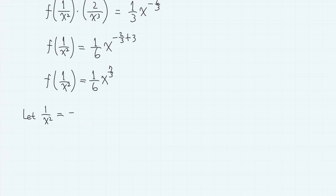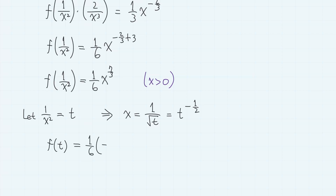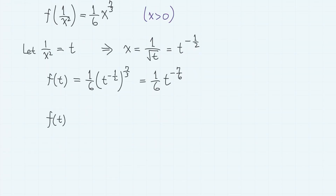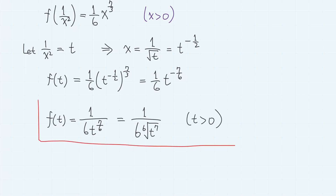Now let 1/x² = t. Because x is positive, we have x = 1/√t = t^(−1/2). So f(t) = (1/6) · (t^(−1/2))^(7/3) = (1/6) · t^(−7/6). We can write this as f(t) = 1 / (6 · t^(7/6)), or using radicals, 1 over 6 times the 6th root of t⁷. And of course t is positive, as stated in the problem.